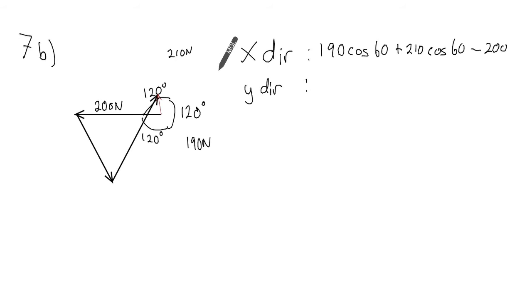So in the y direction we're going to get 190 sin 60. Now the 190 is pointing down, so that will be the negative, and the positive one will be pointing up, which is the 210, and it's going to be sin 60 as well.